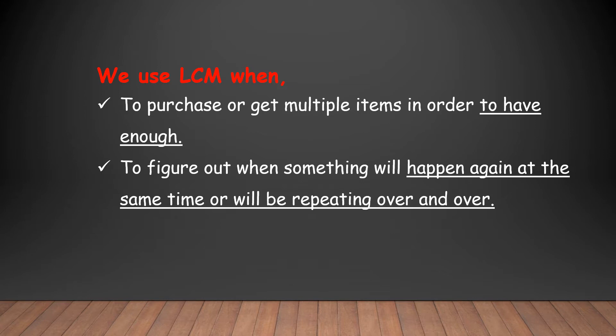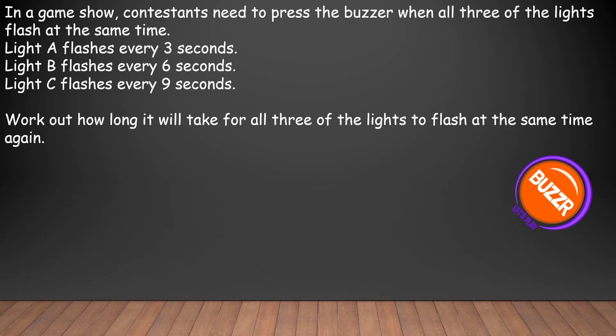Here's the first example. In a game show, contestants need to press the buzzer when all three of the lights flash at the same time. Light A flashes every three seconds, light B flashes every six seconds, and light C flashes every nine seconds. Work out how long it will take for all three of the lights to flash at the same time again.